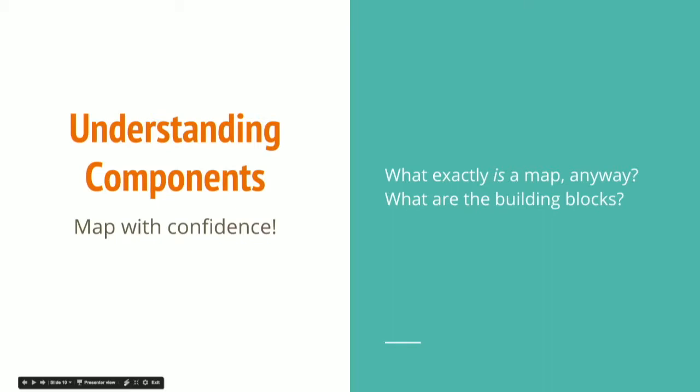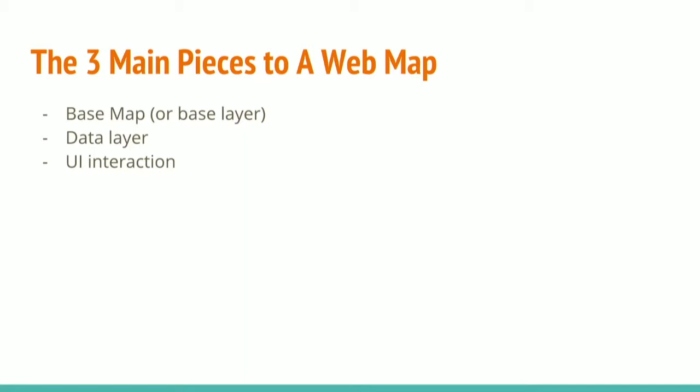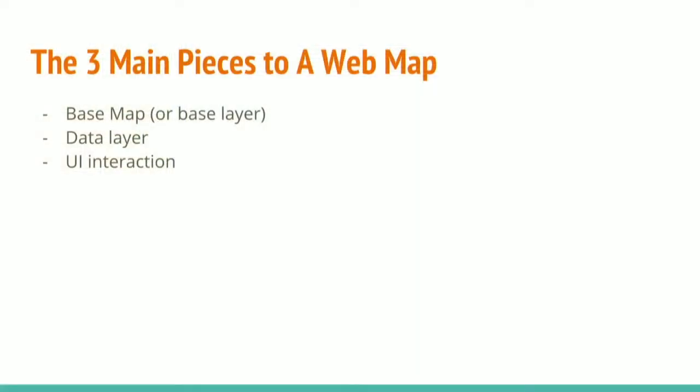There are lots of different ways to use a map on your website or web app. But what is a map? What is it made of? The three main pieces of a web map, the way I think of them, are: you have a base map, you have a data layer, and you have UI interactions. A base map is basically your canvas — the base layer you're going to use to build your story, whether it's giving directions or telling people about Game of Thrones.